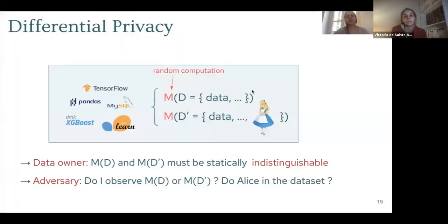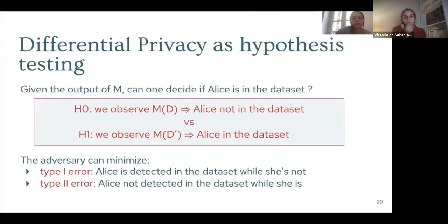We want a user to be able to analyze some sensitive data, but we don't want them to learn whether or not an individual — let's say Alice — is in this dataset. This can be formulated as a hypothesis testing problem, where the null hypothesis is that Alice is not in the dataset, while the alternative hypothesis is that Alice is in the dataset.